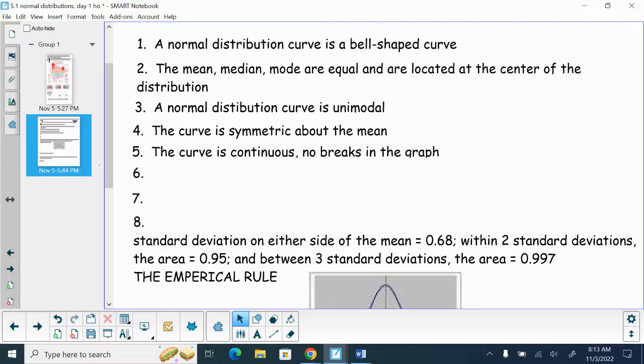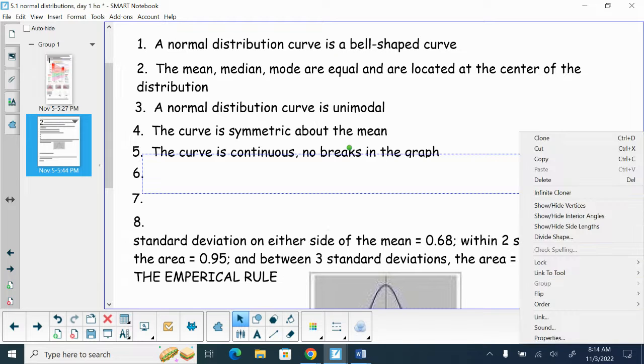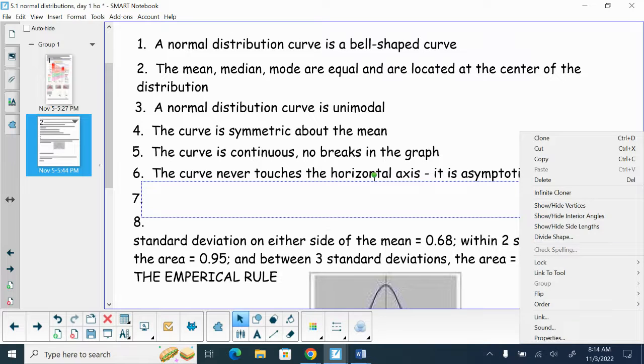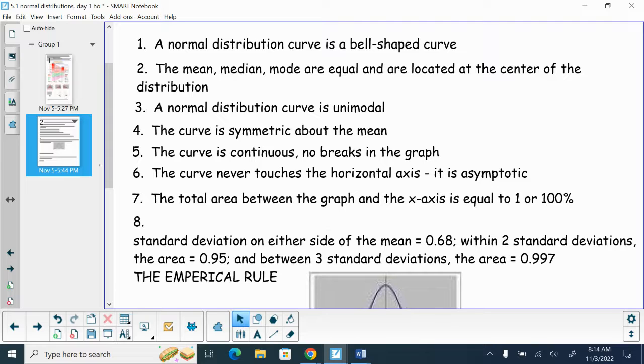The curve is continuous. You have no breaks in the graph. It is a smooth curve. It is continuous. Once again, you're going to have to give me a couple of these characteristics. A lot of people will choose the idea of symmetric because it's short. It's easy to remember. A bell-shaped curve. The curve never touches the x-axis, the horizontal axis, which means it's asymptotic. An asymptote you get closer to. It's a line that you get closer to, but never cross. The area between the graph and the x-axis is equal to one or 100%.